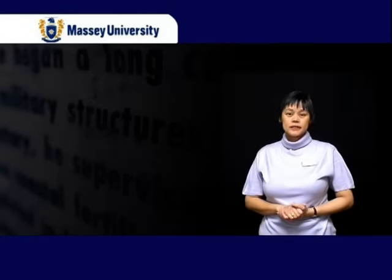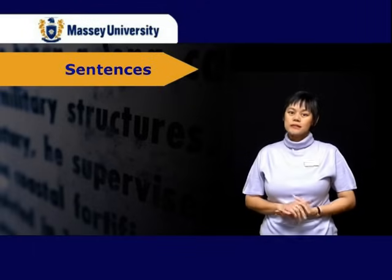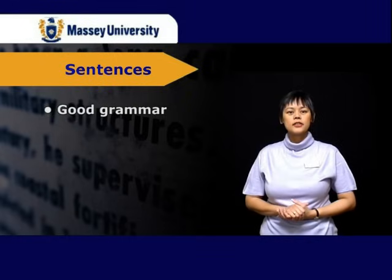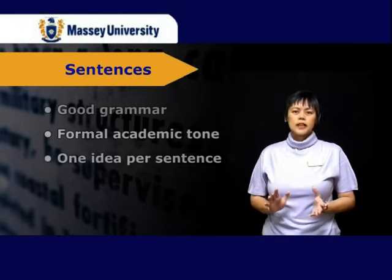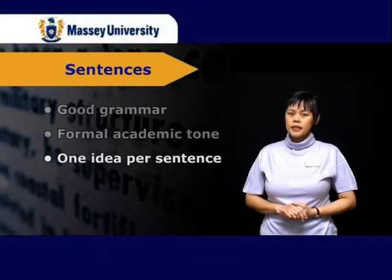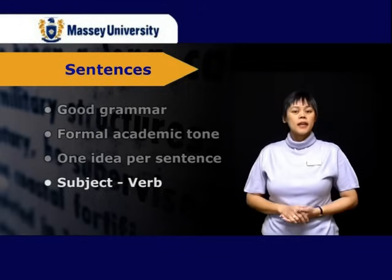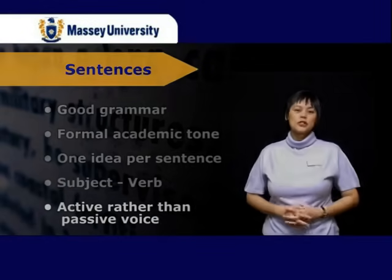Writing a well-presented thesis starts with writing good sentences. Let's first look at the very basic unit of writing: sentences. In a thesis, you are expected to demonstrate good grammar and thoughtful consideration about your topic. You should use a formal academic tone throughout your writing. Sentences should be complete with one idea within every sentence. A complete sentence contains a subject and a verb. It is preferred that you use the active voice rather than the passive voice, as this ensures clarity of expression. Avoid fancy words and fancy-sounding sentences, as this impresses no one — neither your supervisor nor your panel.